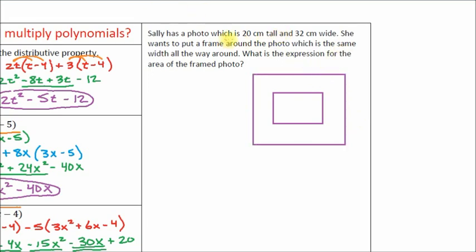So that's what we have so far. Let's label some things. The photo itself is 20 centimeters tall and 32 centimeters wide. To make this diagram a little more readable, I'm going to write those dimensions on the inside of the photo. So for our photo, this is 32 — I'm not going to write centimeters because everything we're doing is in centimeters — and the height is 20. So there are our dimensions of our photo.